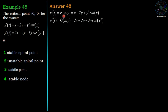Let x'(t) = f(x,y) = x - 2y + y² sin(x), and y'(t) = g(x,y) = 2x - 2y - 3y cos(y²). This is a nonlinear coupled differential equation. To determine the properties of the critical point, we need to convert this equation into linearized form.